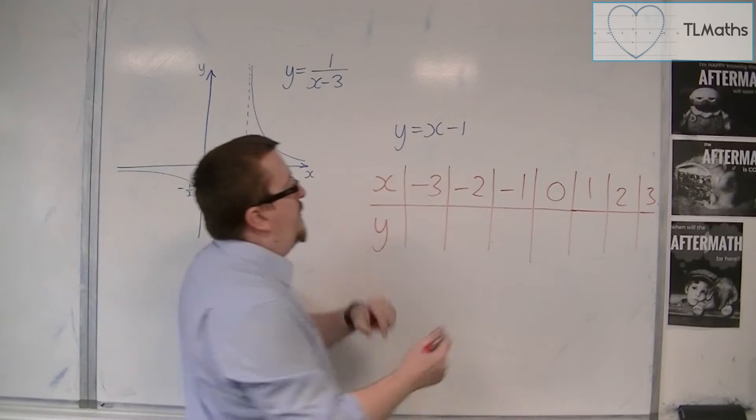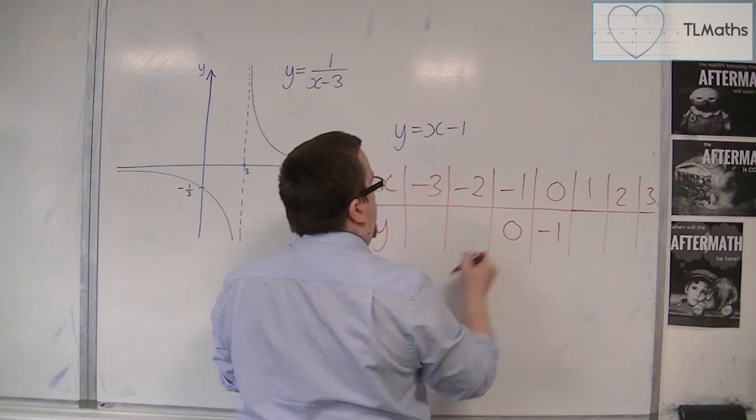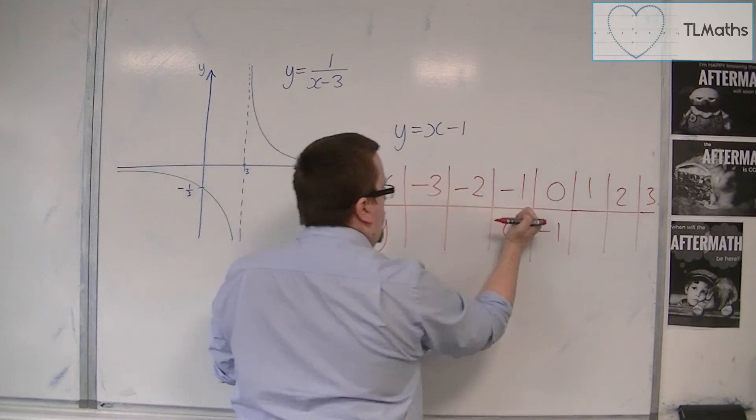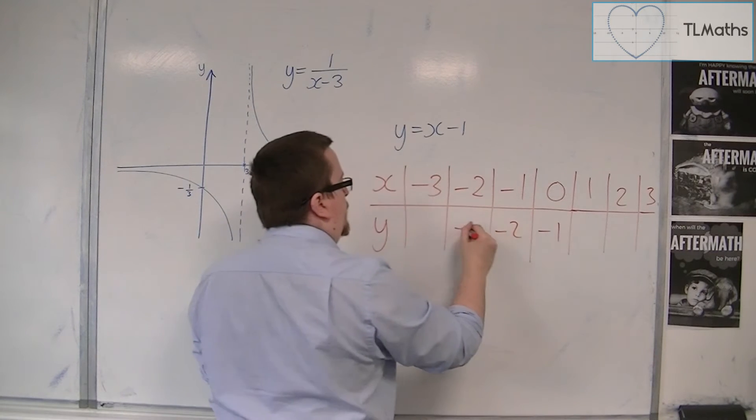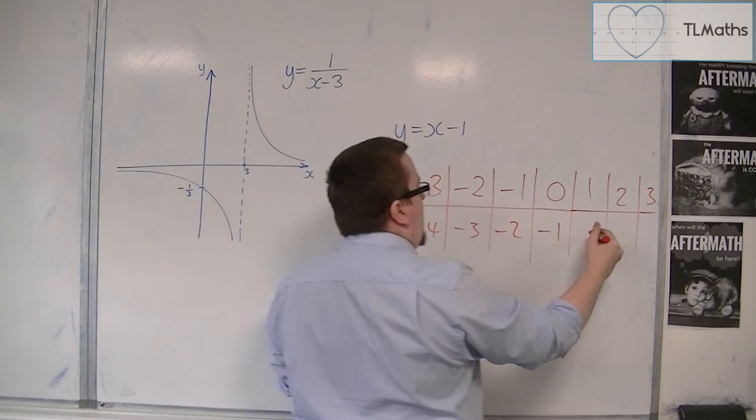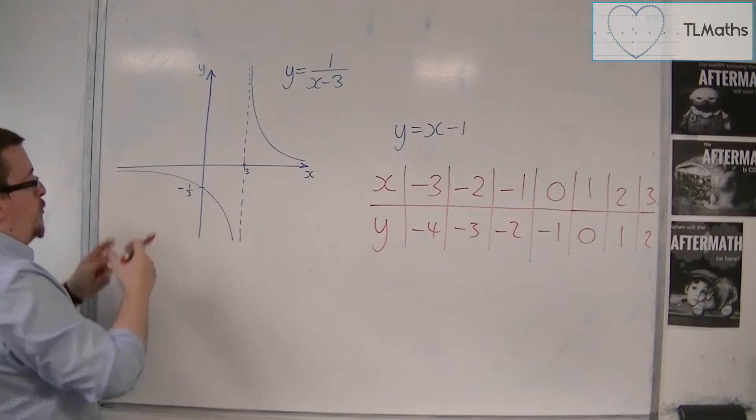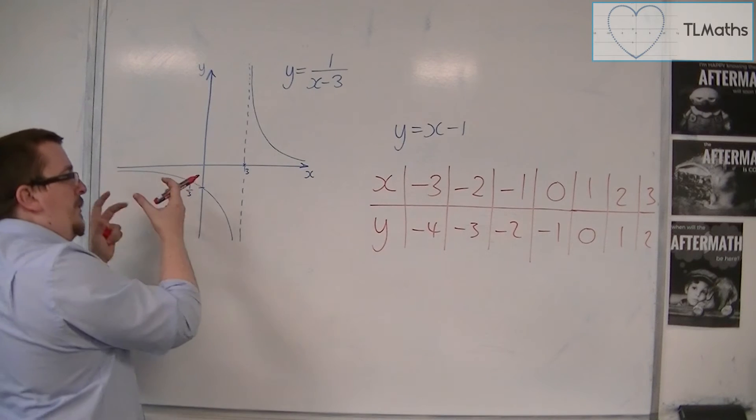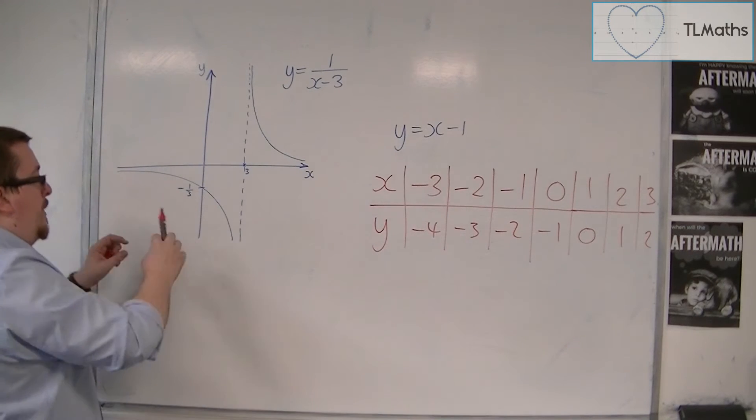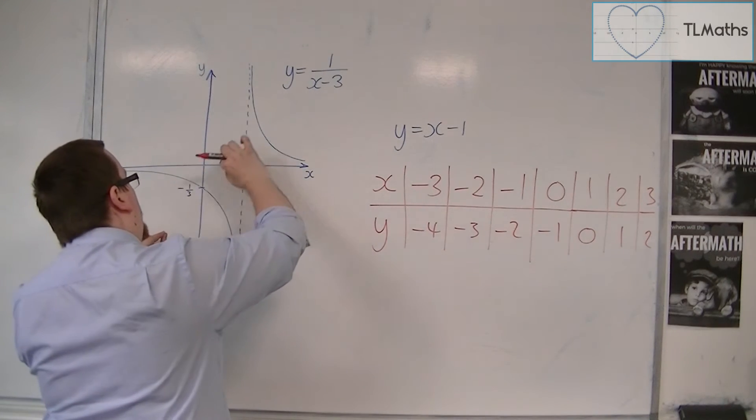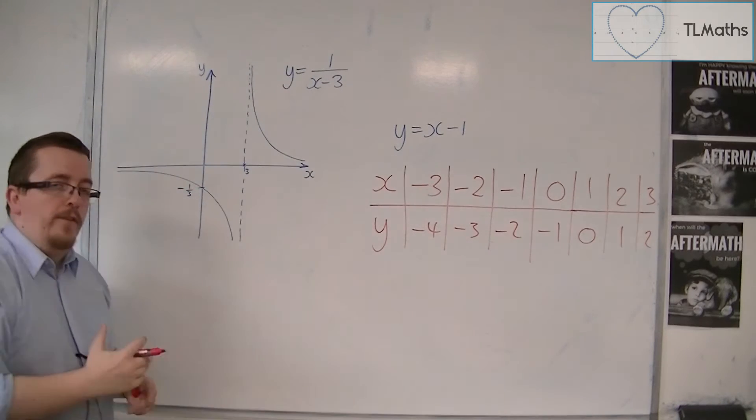And then we will use these points as coordinates. So when x is 0, we're at minus 1. And so in each of these cases, we will gain a coordinate. So we'll have minus 3, minus 4, which we'll be able to pull out. Minus 2, minus 3, minus 1, minus 2. And then we're going to be able to draw a nice, accurate line through the graph.